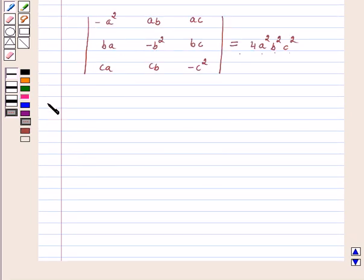Let's start the solution. On left hand side we have minus a square ab ac, ba minus b square bc, ca cb and minus c square.